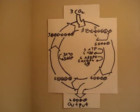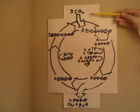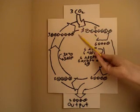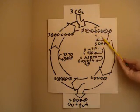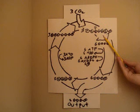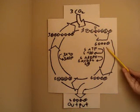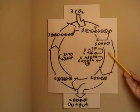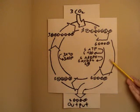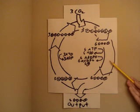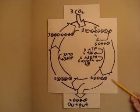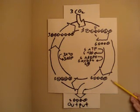The Calvin cycle involves three carbon dioxide molecules combining with RuBP, which forms three six-carbon intermediates that immediately split into six PGA. After six ATP and NADPH come in and a series of enzyme reactions, the PGA forms PGAL.